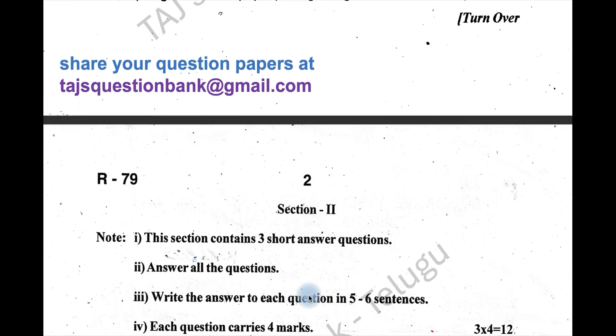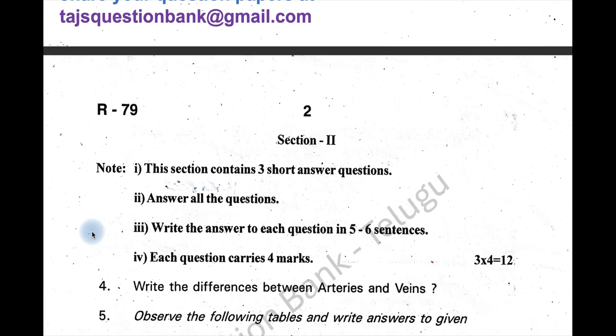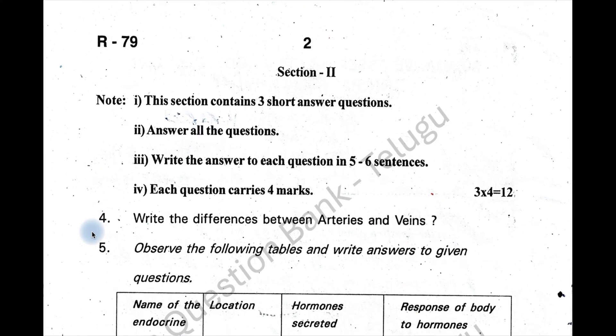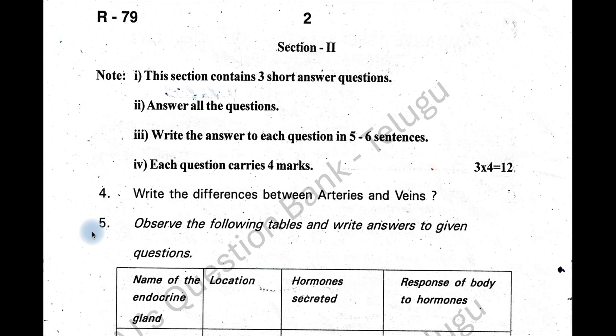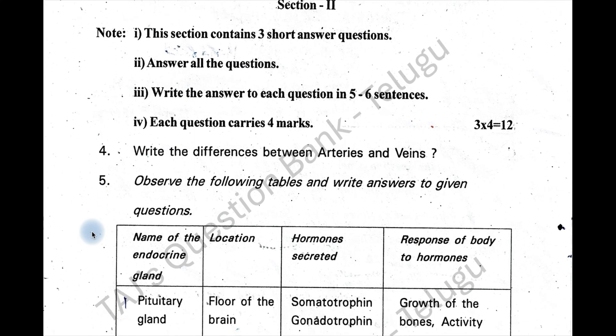In the 10th class essay 1 question paper of Biological Sciences, the October 2024 paper is the E set, set R79 — R stands for Rangarady district. This has two different sets from two different districts.